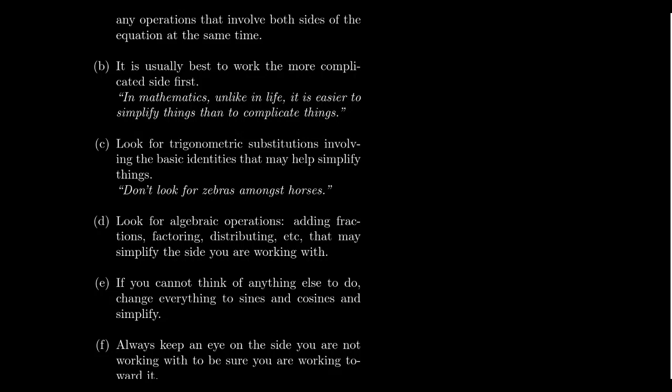The third guideline is that when trying to prove trigonometric identities, look for trigonometric substitutions that involve the basic identities first — the ratio, reciprocal, Pythagorean, and symmetry identities. Use the basic identities before the more exotic ones. As we move to lecture 17 and beyond and learn new identities like the double-angle, half-angle, and product-sum identities, we should avoid the more exotic identities until we have no better option. In medicine, when giving a diagnosis, you're told don't look for zebras among the horses — if you see one, it's probably a horse. So let's use the more basic identities first.